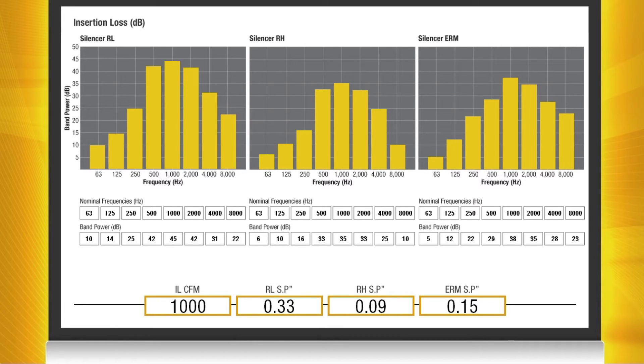This is something to keep in mind when selecting silencers. It's always a balancing act between insertion loss and pressure drop. The more sound that you want to remove from a duct system the more pressure drop you're going to have to deal with.